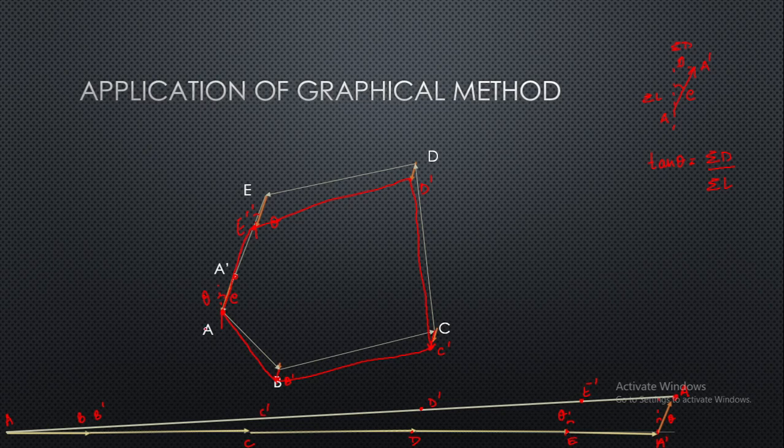So now the red one is our corrected traverse. This method is very simple. All you have to do is maintain the orientation of correction, and while transferring back, you have to maintain that orientation. The magnitude is obtained from this point to this point. This is your magnitude of correction. And this method is equivalent to Bowditch method. The error correction in all the lines is very simple and equal to the Bowditch method.